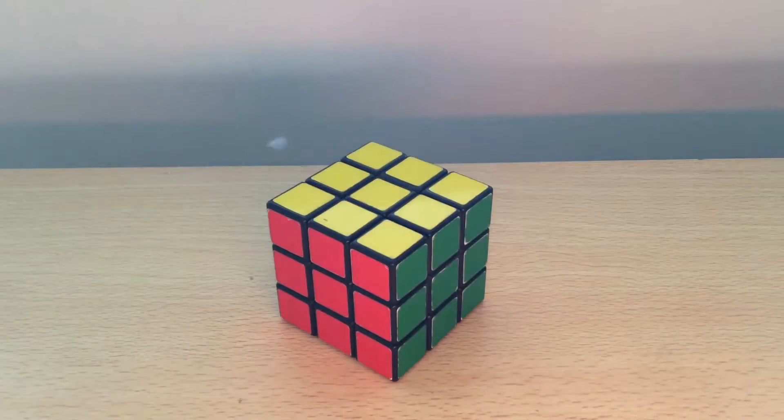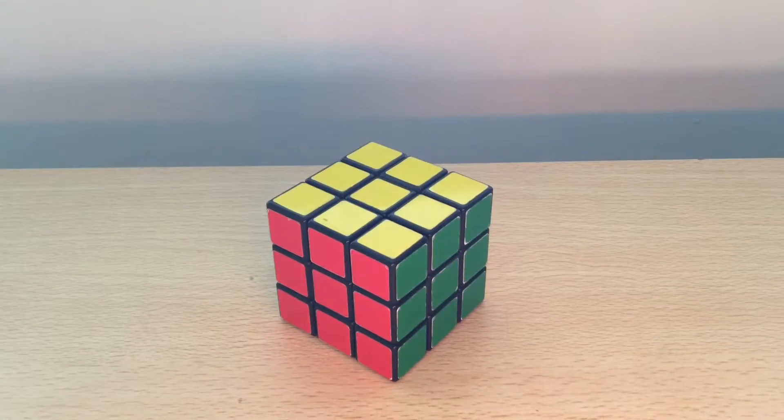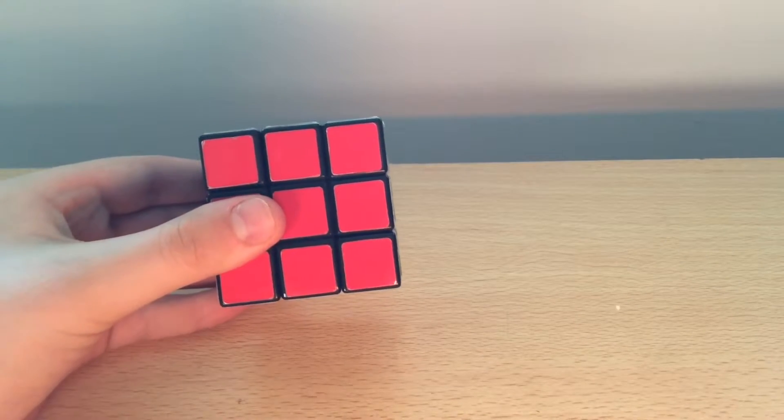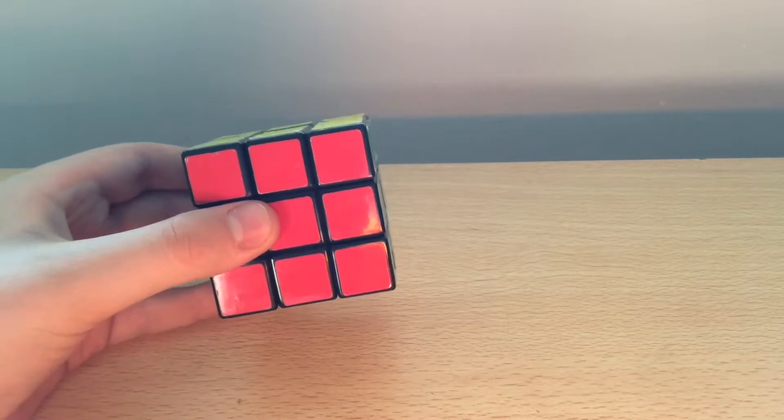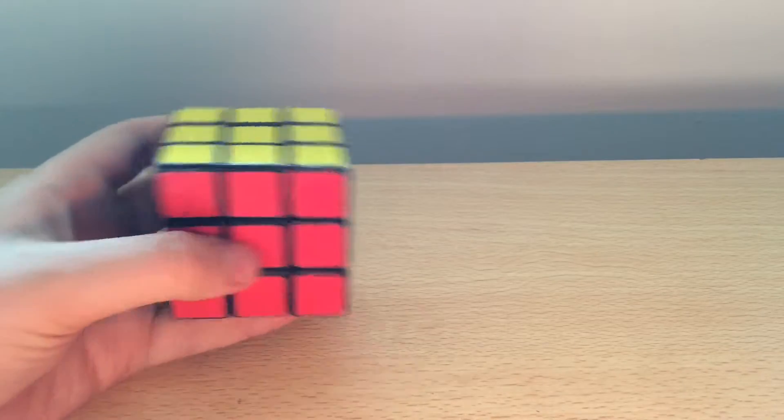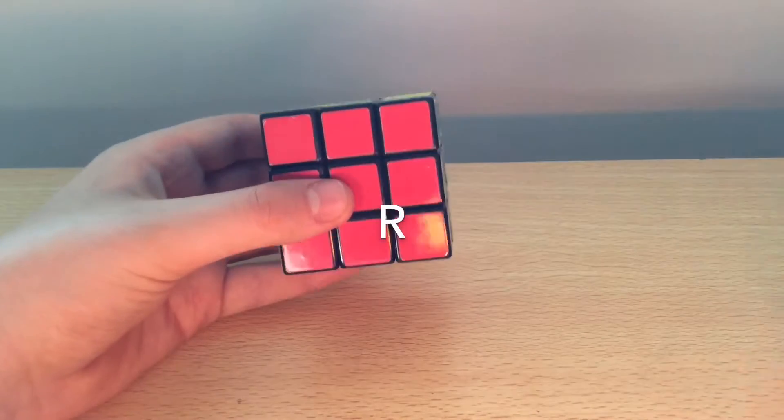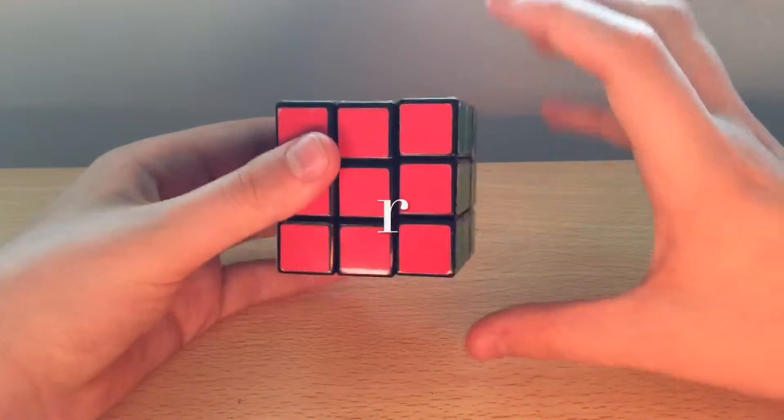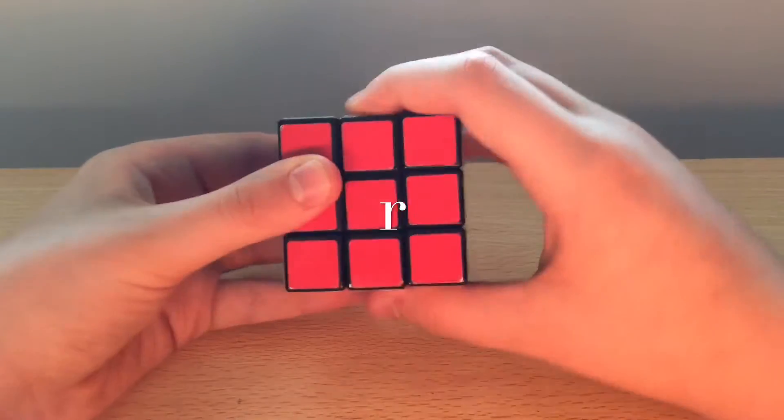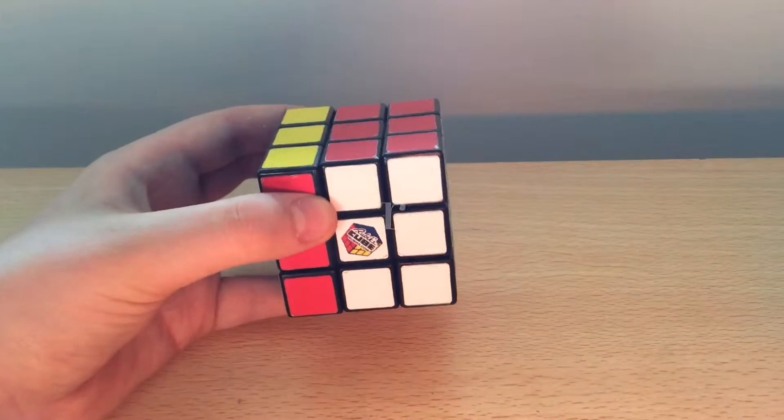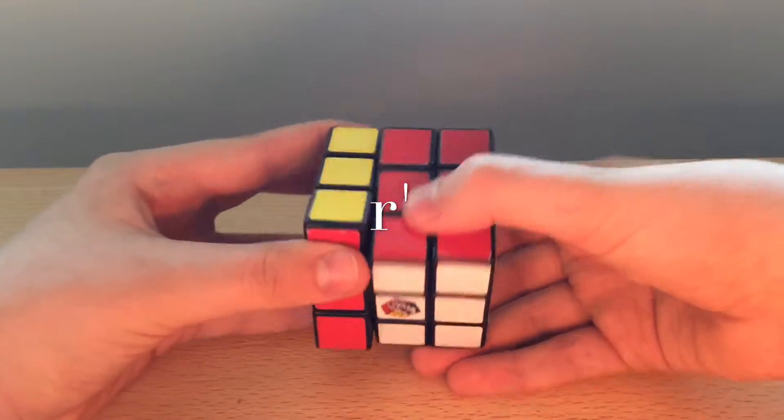So after those slice moves, we're going to move into the double layer turns. Double layer turns are really simple, because all they are is a lowercase letter for what they usually are, except you move the middle layer with it. So if we had an uppercase R, we'd move this face. If we had a lowercase r, we'd move this and the middle slice. So lowercase r would look like that, and a lowercase r inverted would look like that.